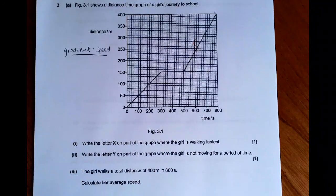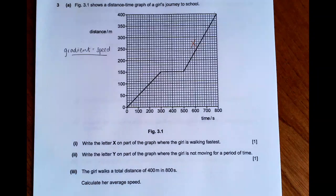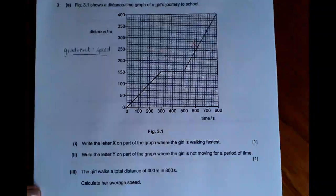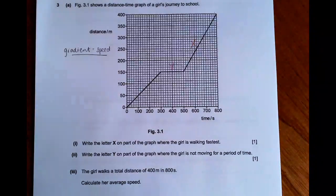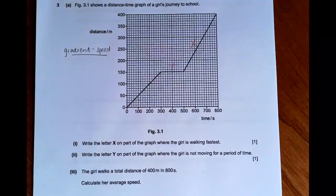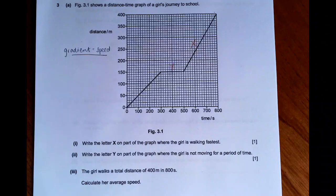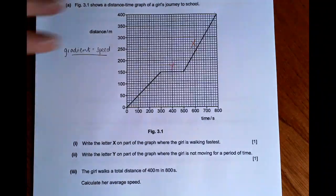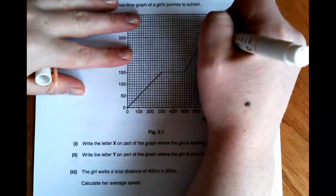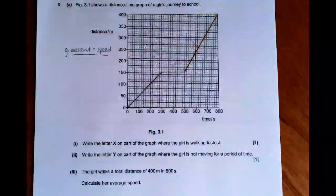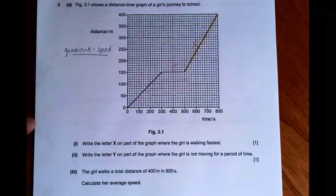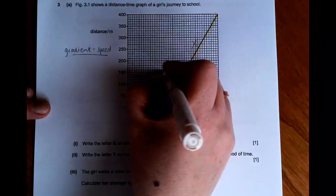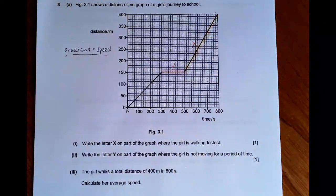And then Y, where the girl is not moving, the distance is unchanged. So that is going to be the horizontal gradient section. But if your answer was anywhere along here for X, that would be fine. And if your answer was anywhere along here for Y, that would also be fine.